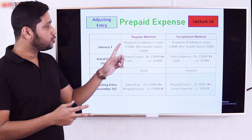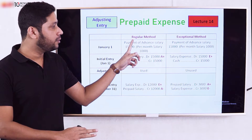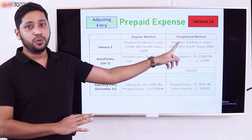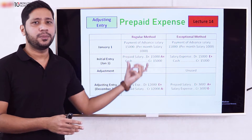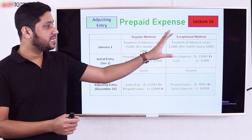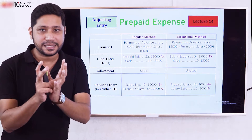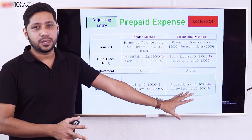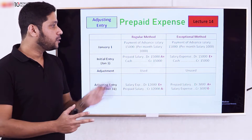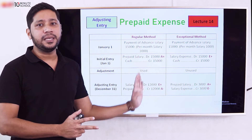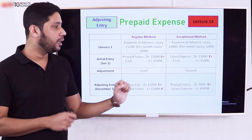For prepaid expense we have two methods: the regular method and the exceptional method. We can follow the regular method for the usual exam, but the exceptional method is used when there are specific hints.